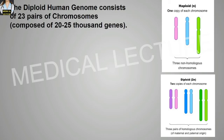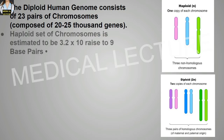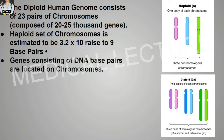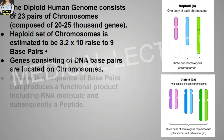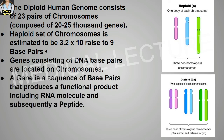The diploid human genome consists of 23 pairs of chromosomes and is composed of 20,000 to 25,000 genes. The haploid set of chromosomes is estimated to have 3.2 × 10⁹ base pairs. Genes consisting of DNA base pairs are located on chromosomes. A gene is a sequence of base pairs that produces a functional product, including an RNA molecule and subsequently a peptide.